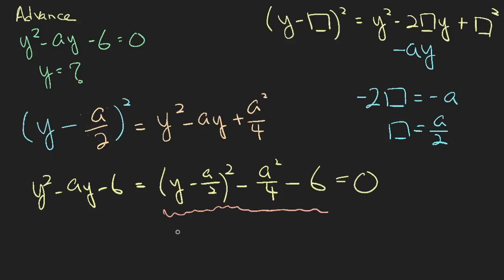So we can proceed to solve the equation. y minus a over two squared equals a squared over four plus six. We shift these two terms to the right hand side. Now we square root both a squared over four plus six.